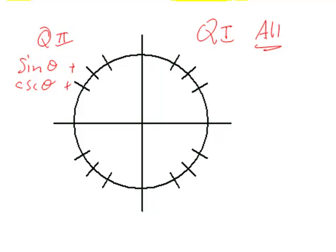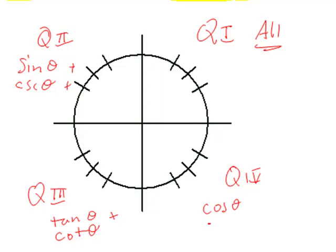In quadrant three, only the tangent and its reciprocal cotangent of theta are positive. And in quadrant four, only the cosine and its reciprocal secant are positive.